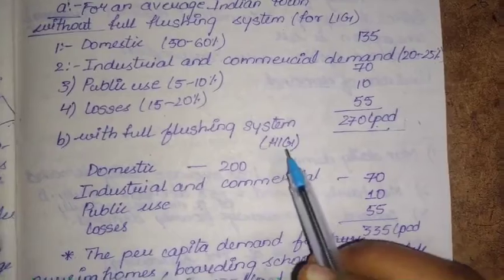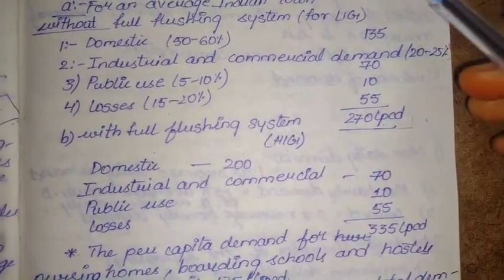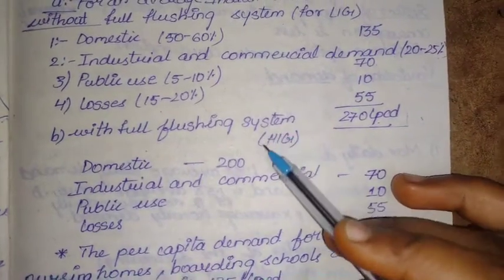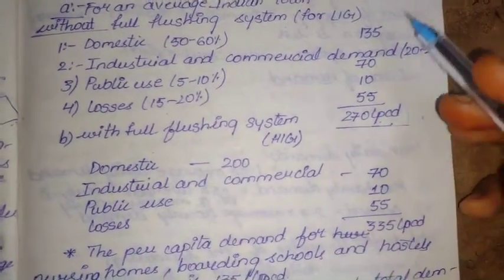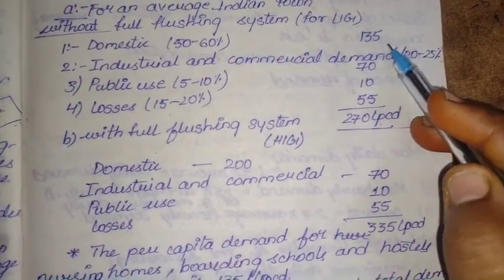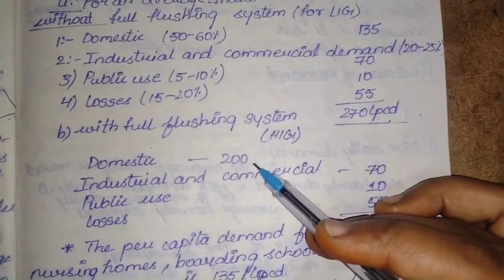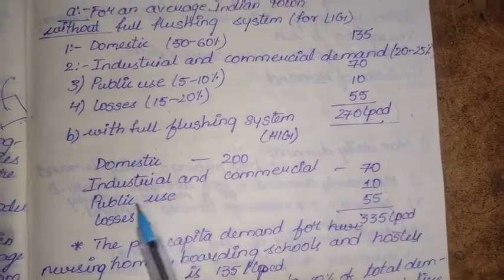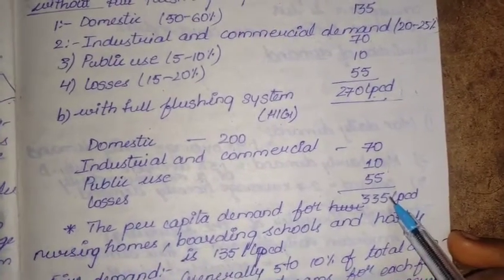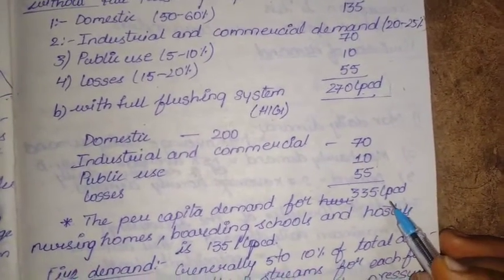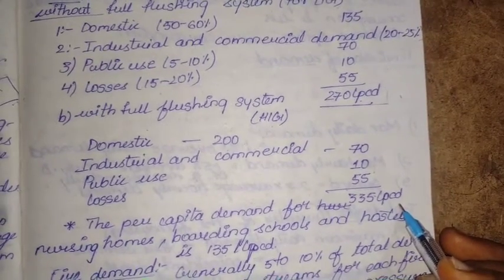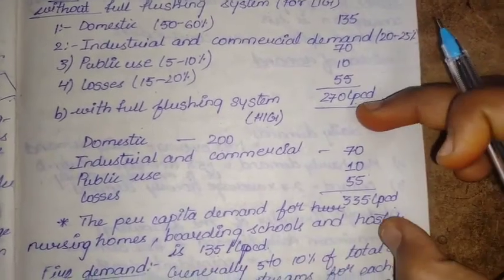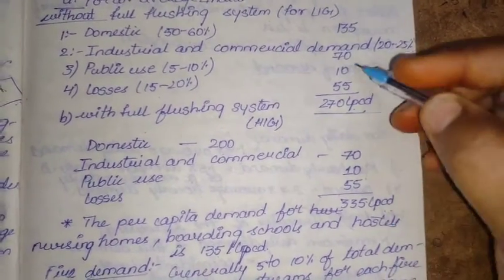When providing a full flushing system, that is for High Income Groups (HIG), the domestic demand increases to 200 liters — an increase of 65 liters over the LIG figure of 135. The remaining components stay the same: industrial and commercial demand is 70 liters, public use is 10 liters, and losses are 55 liters, giving a total of 335 liters per capita per day. Remember: LIG is 270 LPCD and HIG is 335 LPCD.